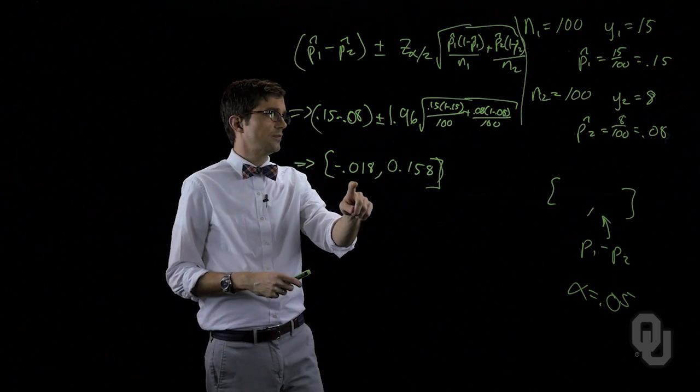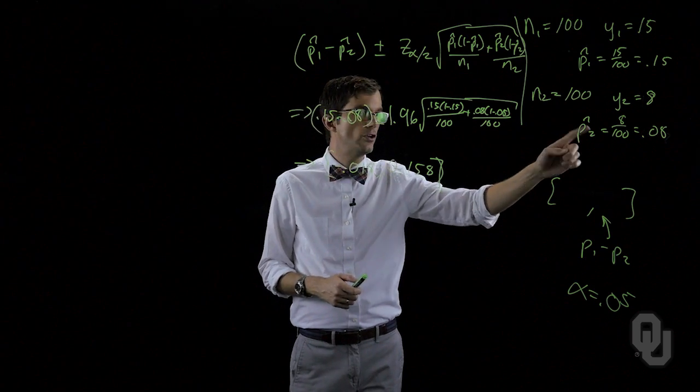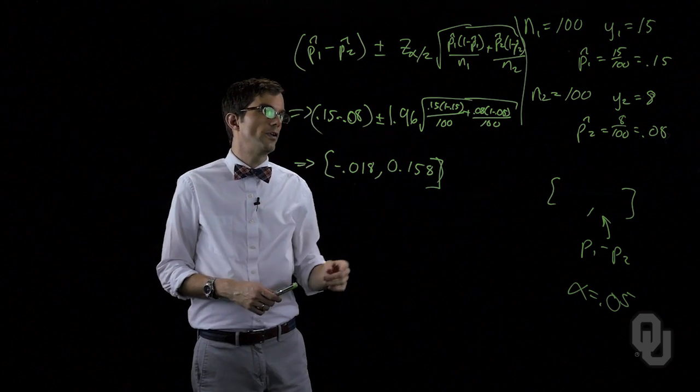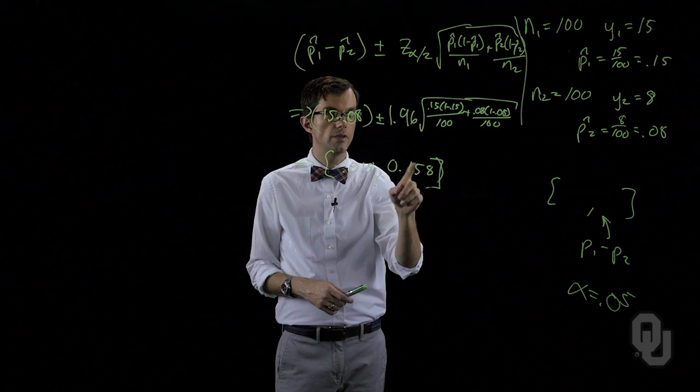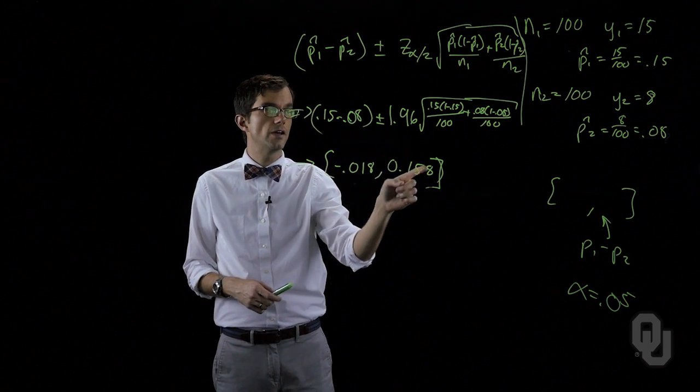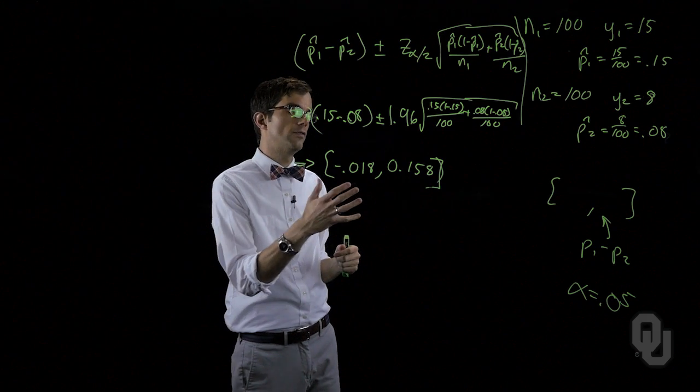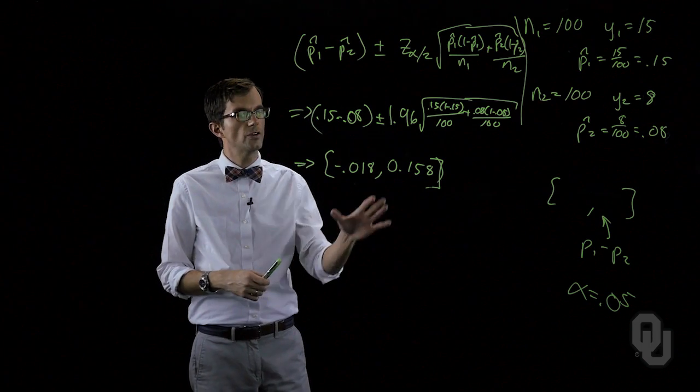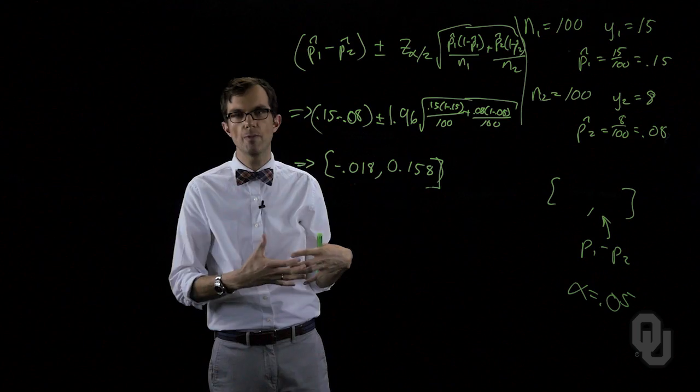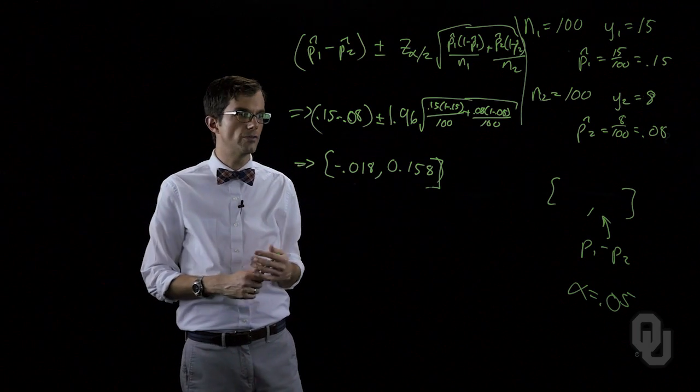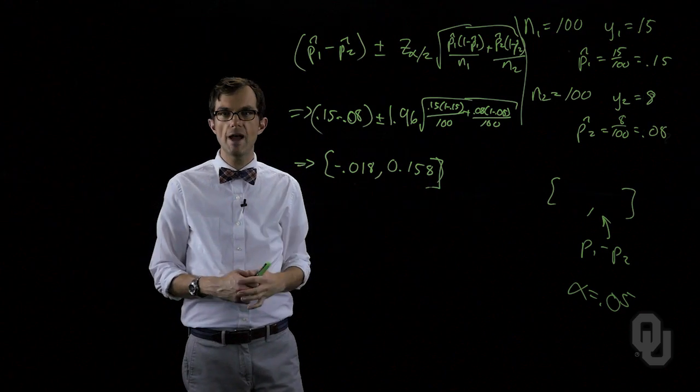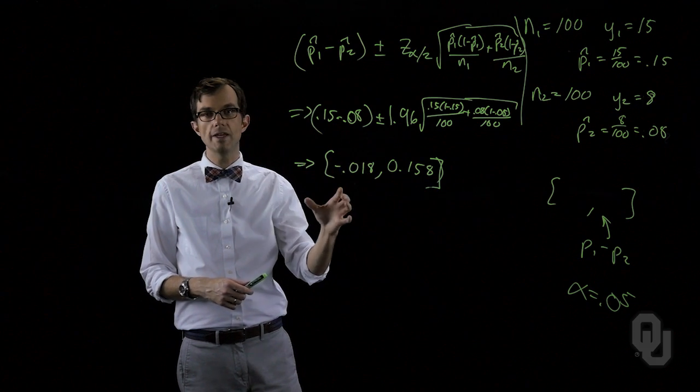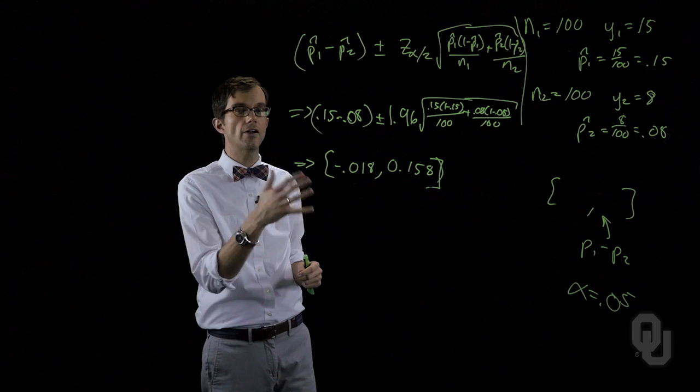On the lower bound we have a negative number which says that P two produces a larger amount of defective units. And on the upper bound we've got a positive number which says P one, that is the layout A, has a larger number of days that, or shifts that didn't meet our specification. So this is kind of inconclusive if we're wanting to draw the conclusion about which layout is better. But we do have a set of bounds for the difference in the proportions of days that don't meet specifications between layout A and layout B.